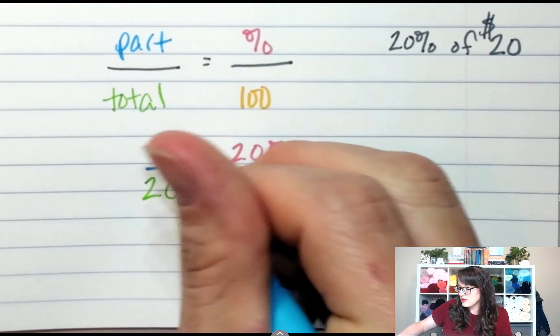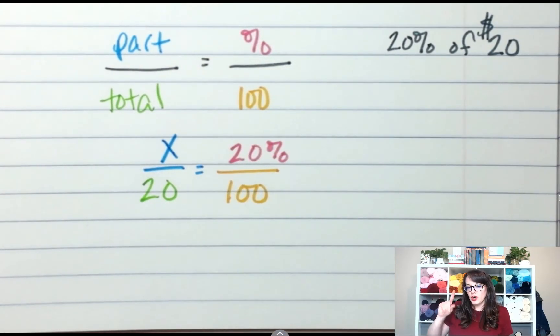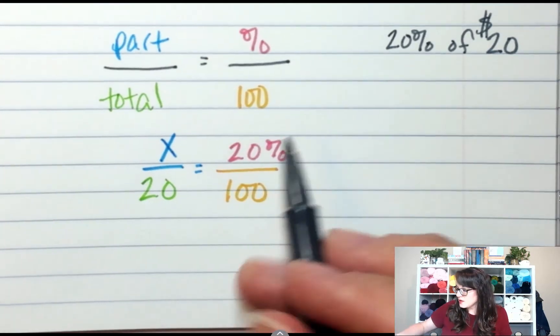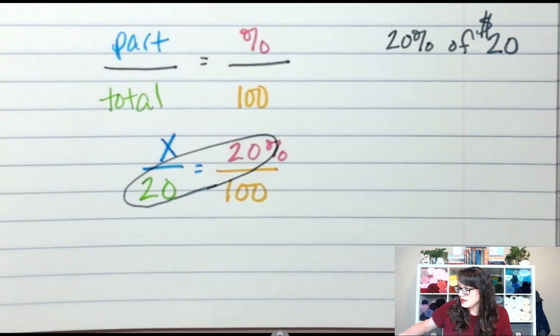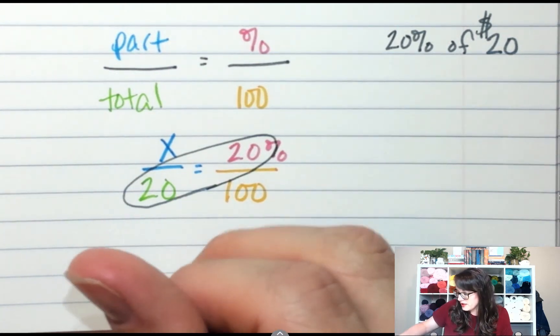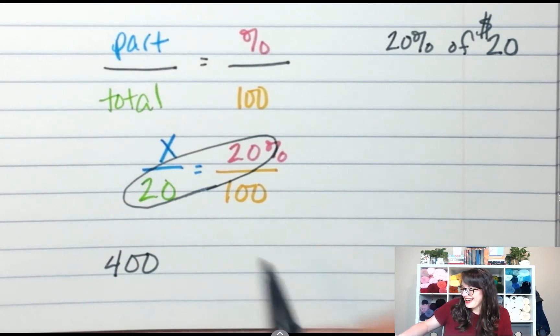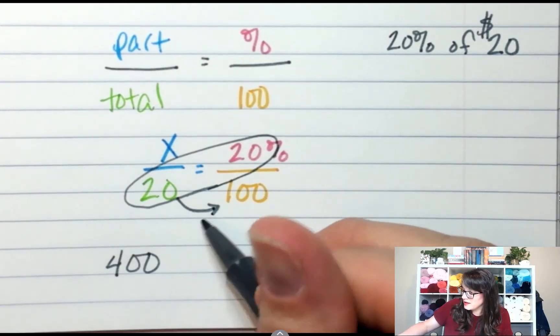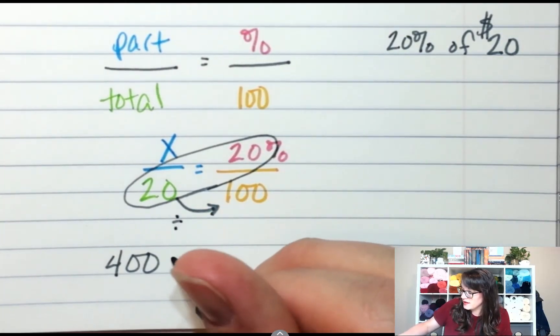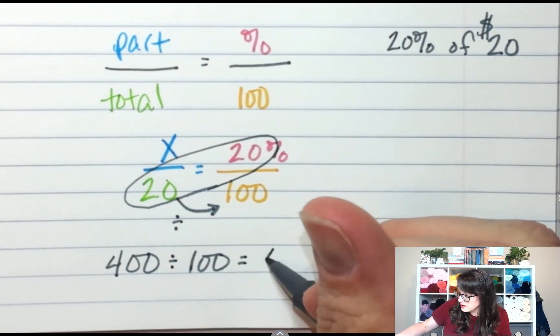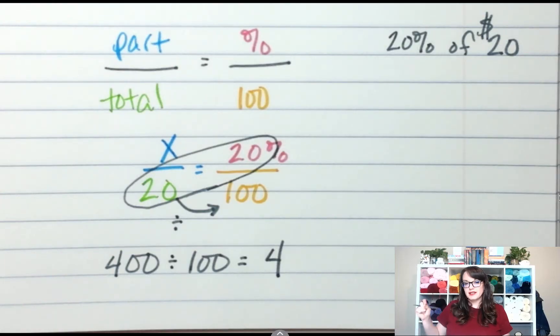Now I'm going to cross multiply and divide. What two numbers do you cross multiply? 20 times 20. So 20 times 20 is 400. And then I'm going to divide by 100, which equals 4. So 20% of 20 is $4.